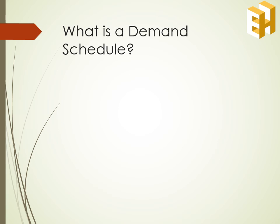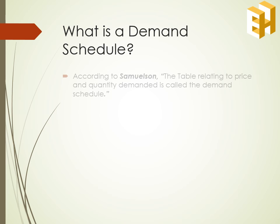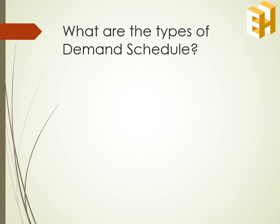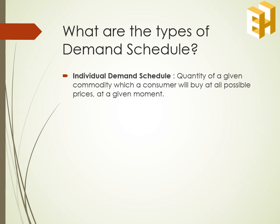After studying the demand curve, let's understand what is a demand schedule. Samuelson defined the demand schedule as the table relating price and quantity demanded. Thus, demand schedule is a tabular presentation of quantity demanded. The first type is the individual demand schedule — a tabular presentation of the quantity demanded for a single consumer, showing the quantity demanded of a given commodity by one consumer at all possible prices at a given moment.